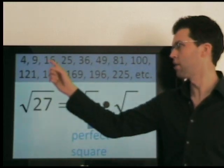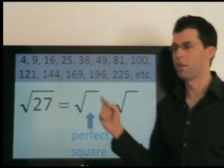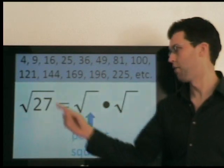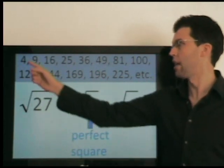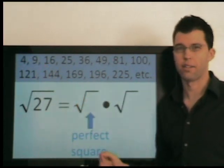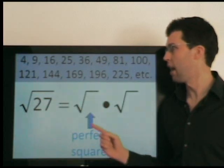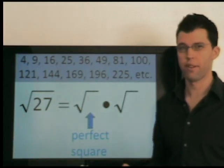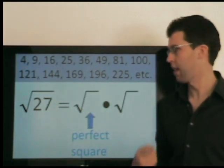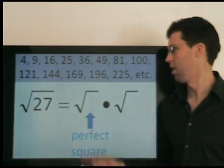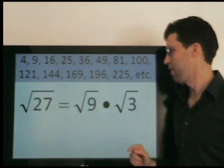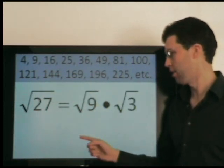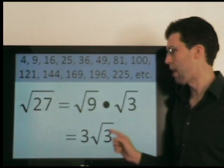We must go through this list to determine the largest perfect square factor of 27. Is 4 a factor of 27? No. Is 9? Yes. Is 9 the largest perfect square factor? In this case, yes. So 9 times 3. This can be simplified: radical 3 times radical 3.